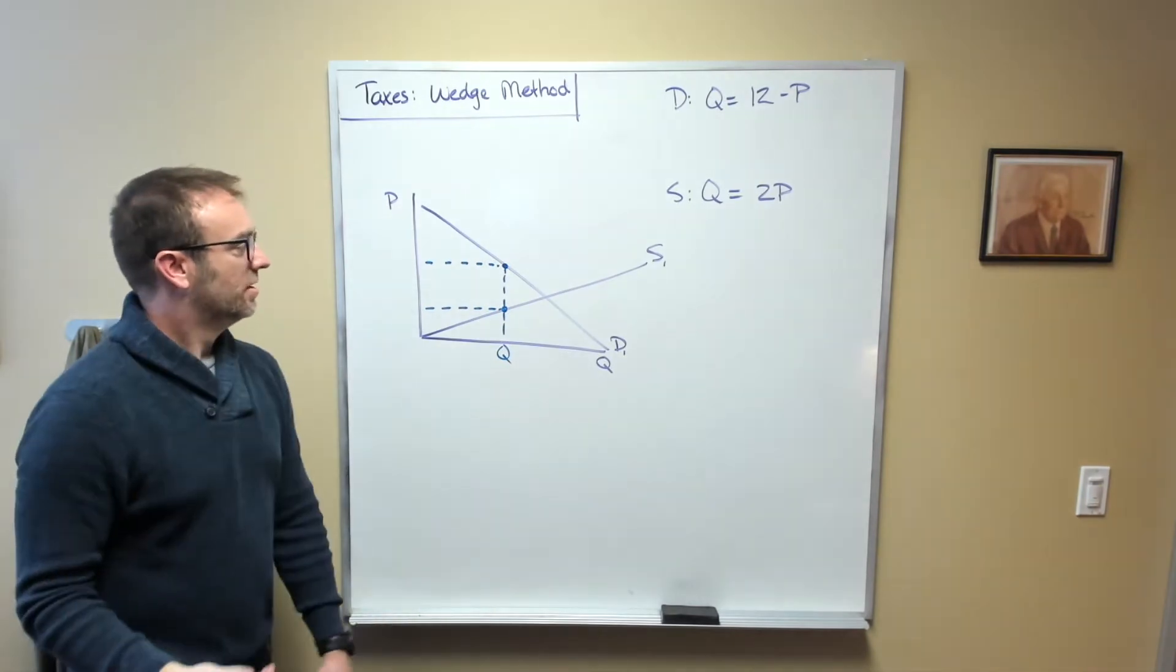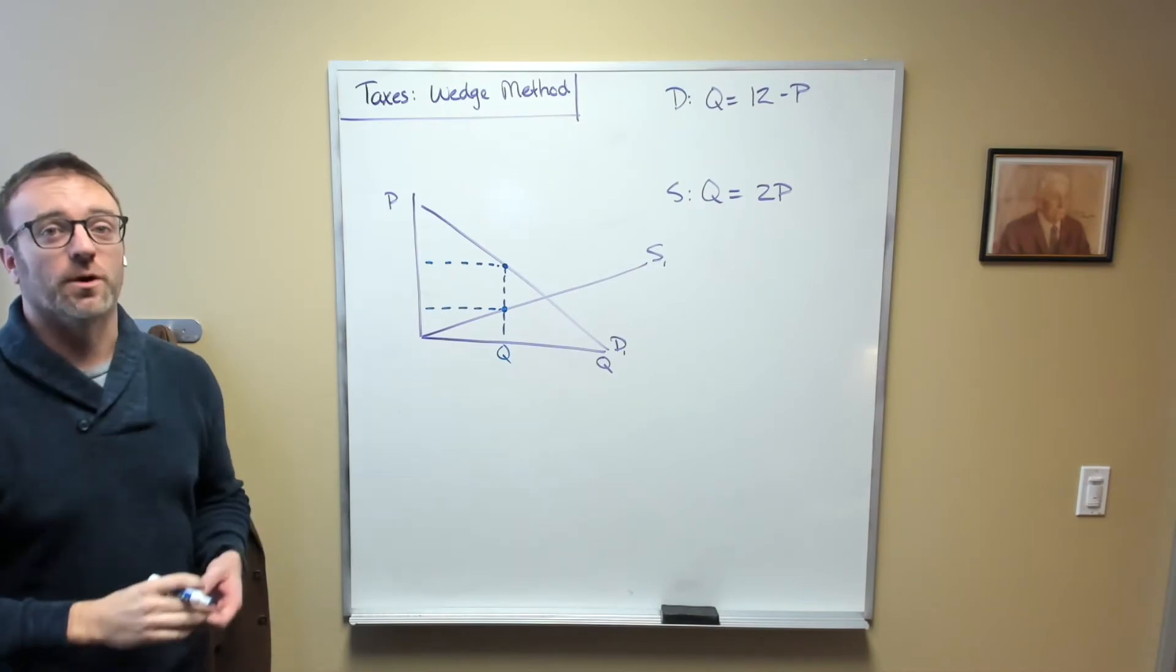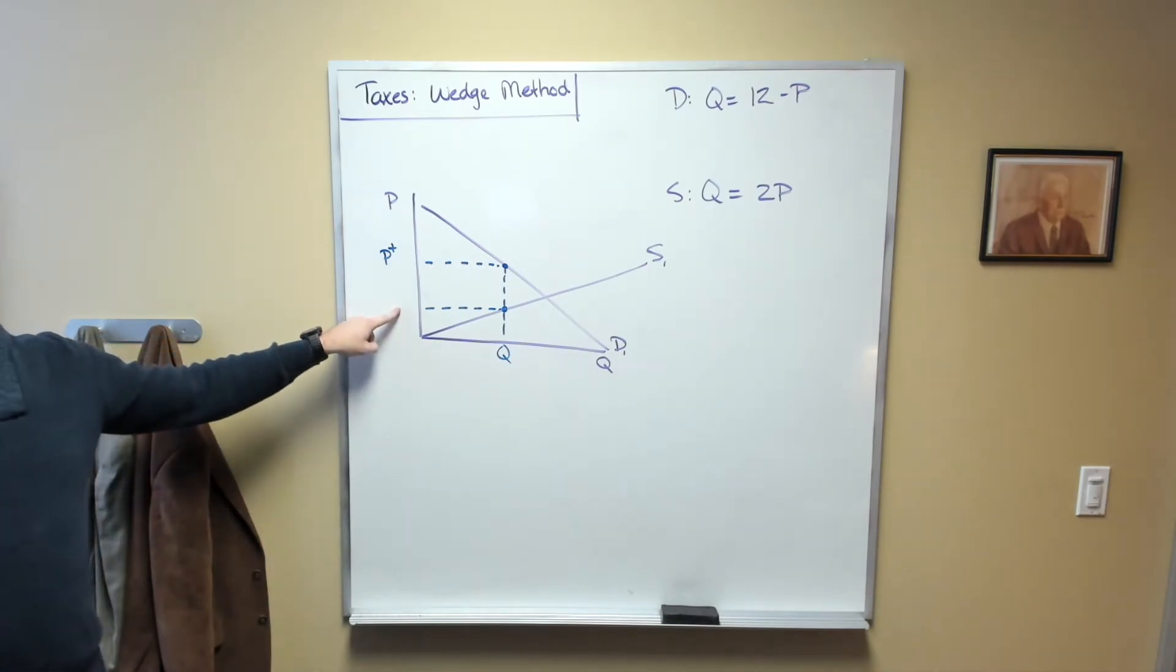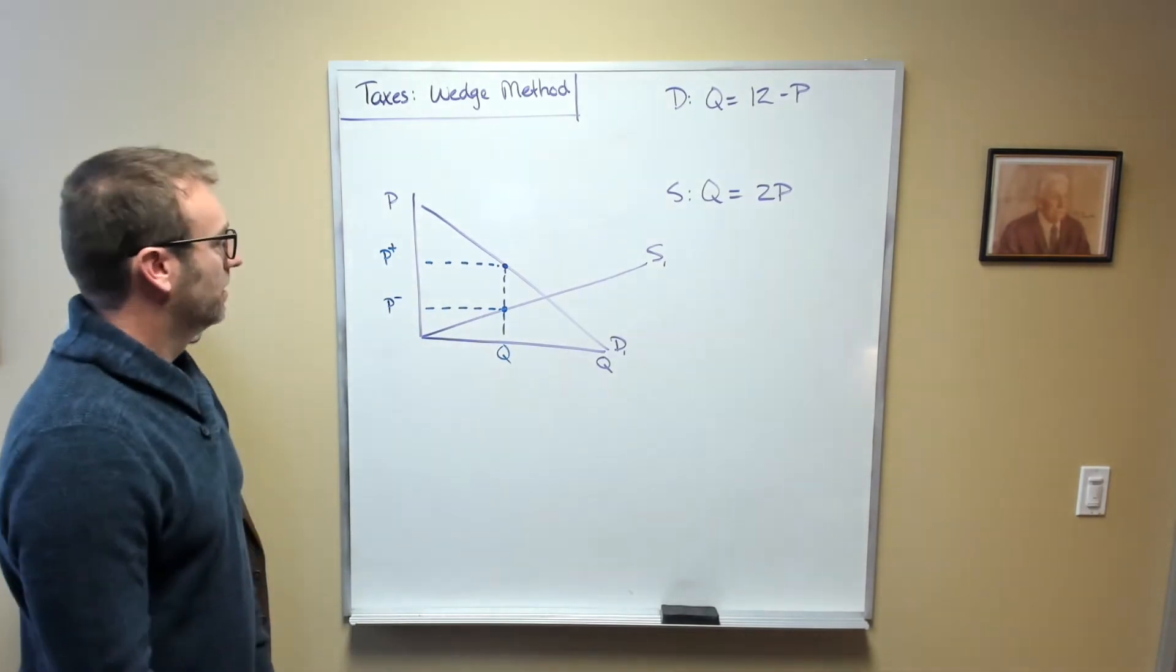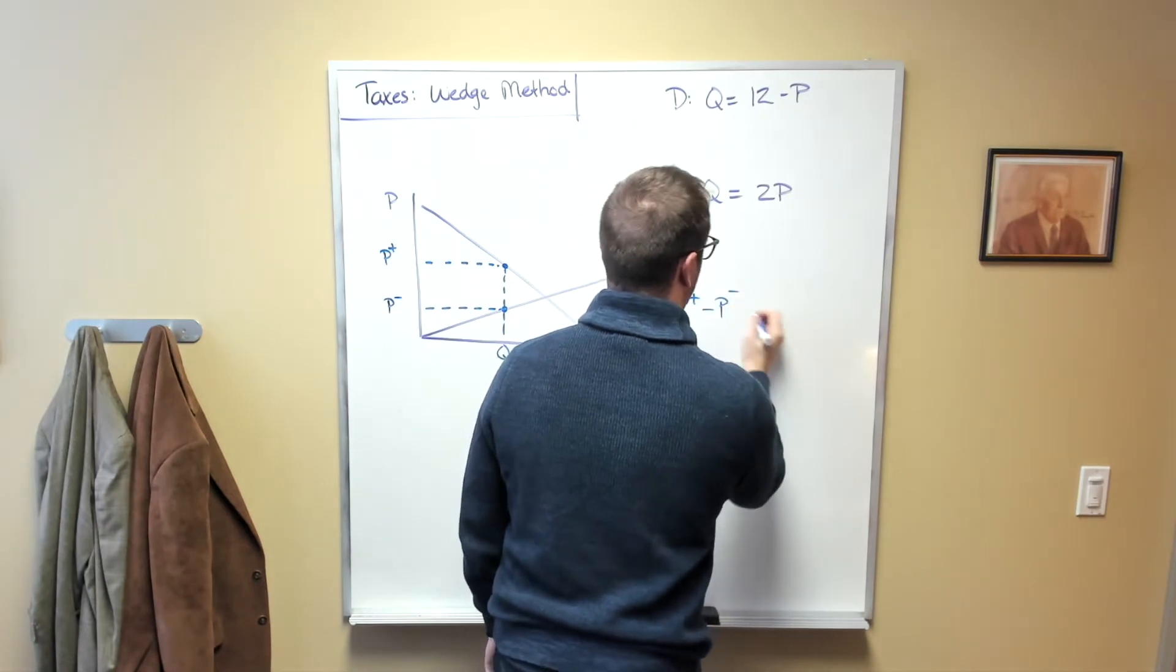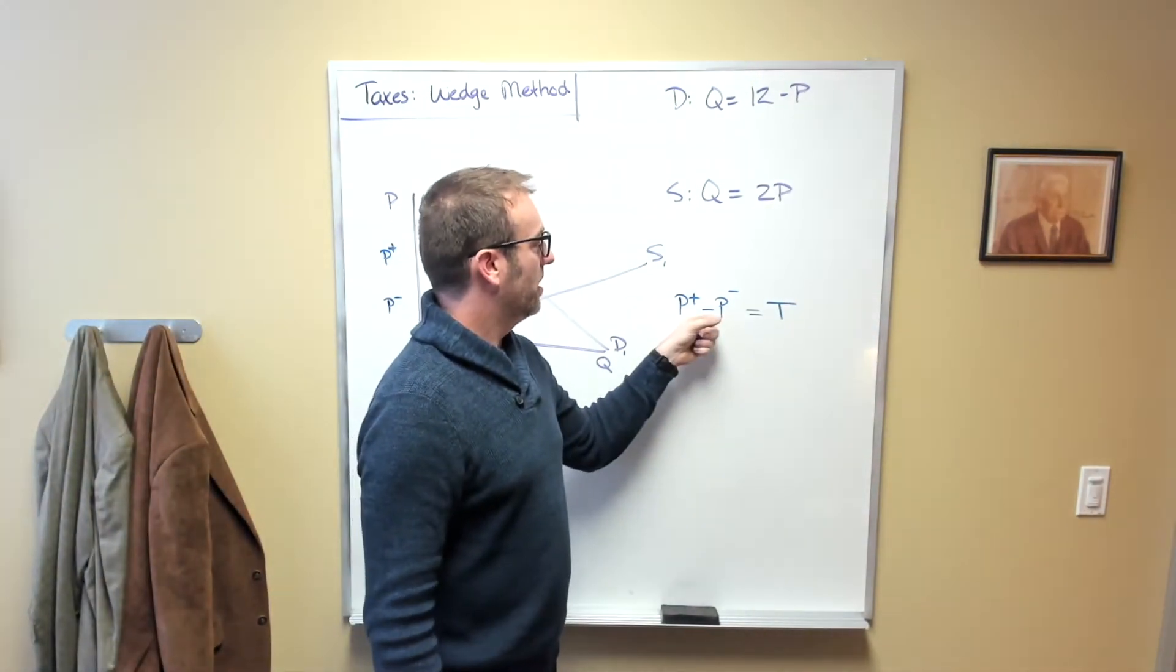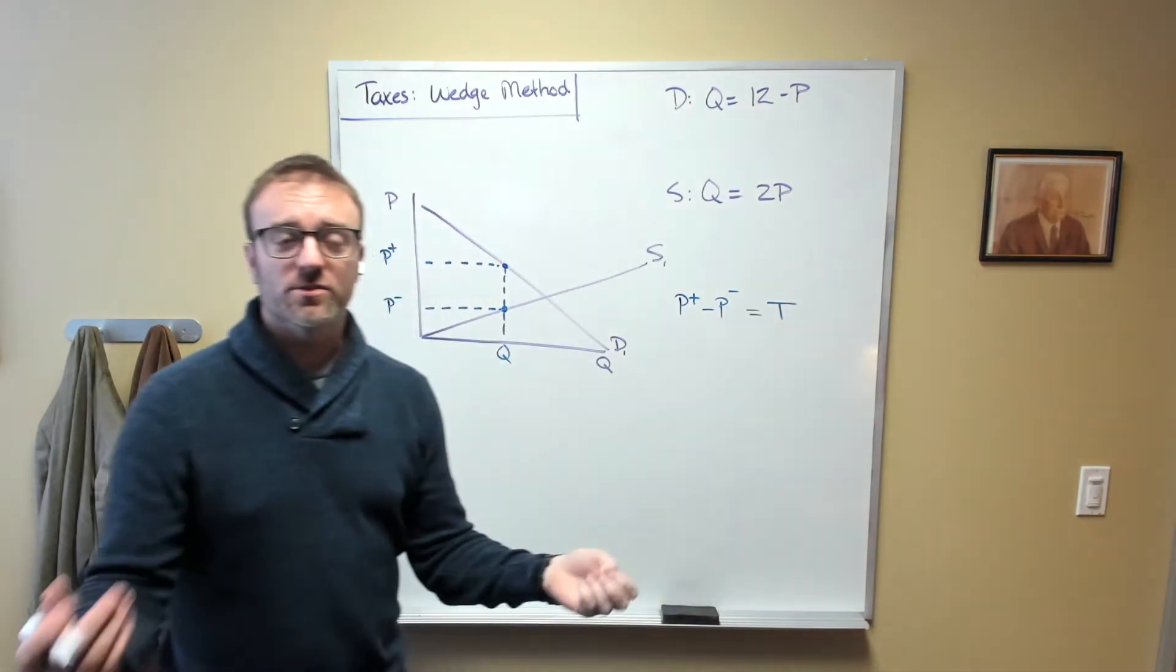What I like to do is denote the price up here that the consumers are paying as P plus. And this price down here, the one that the producers are keeping, I like to denote this as P minus. And what we know is that P plus minus P minus has to be equal to the amount of the tax. In other words, the price that we pay minus the price that the producers get to keep has to be equal to the amount of the tax. That's just an identity.